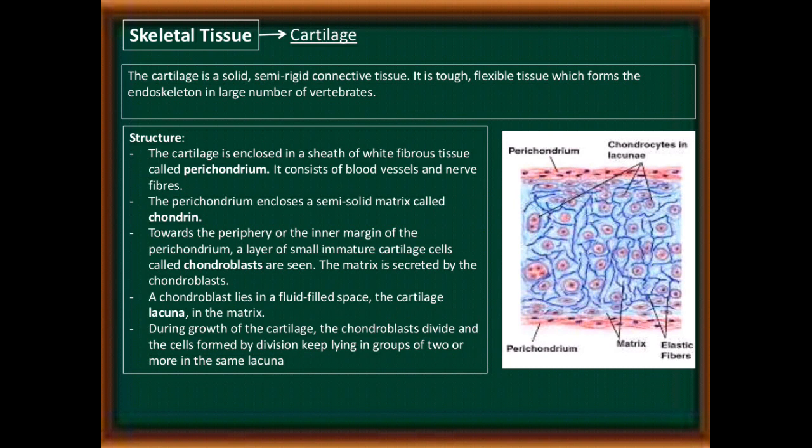The perichondrium encloses a semi-solid matrix called chondrin — chondrin is the matrix of cartilage. Towards the periphery or inner margin of the perichondrium, a layer of small immature cartilage cells called chondroblasts are seen. Chondroblast is the cell of cartilage. The matrix is secreted by the chondroblast. A chondroblast lies in a fluid-filled space called the cartilage lacuna in the matrix.